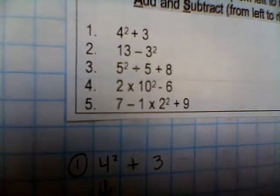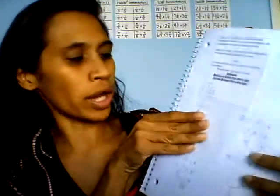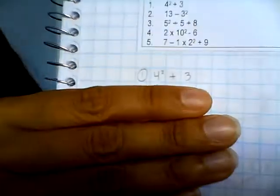So make sure you have the problems down. Zoom in on that. I'm going to show you number one right here. We have 4² + 3.